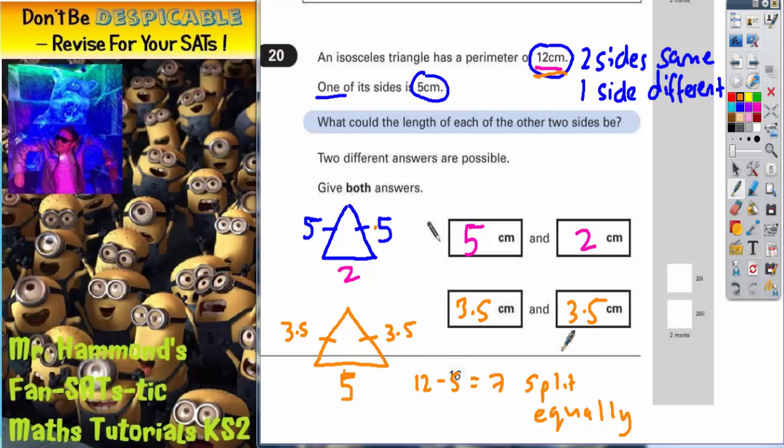And there's your two different answers which are possible. As a quick check, let's just check it. 5 plus 2 is 7, plus the 5 that we're told about is 12, so that works. And 3.5 plus 3.5 is 7, plus the 5 that we're told about is also 12. So that works.